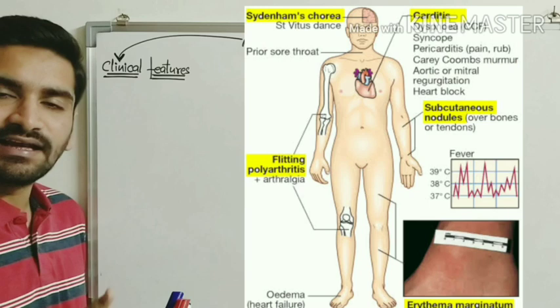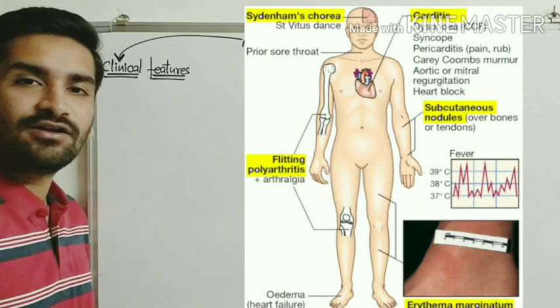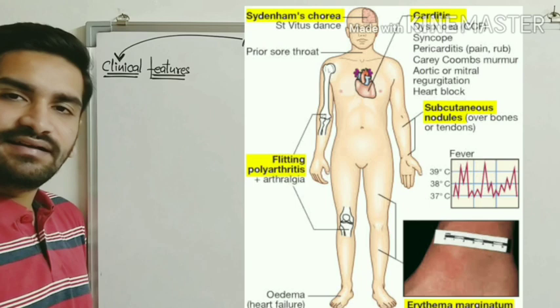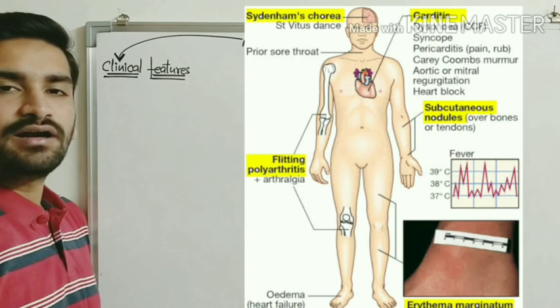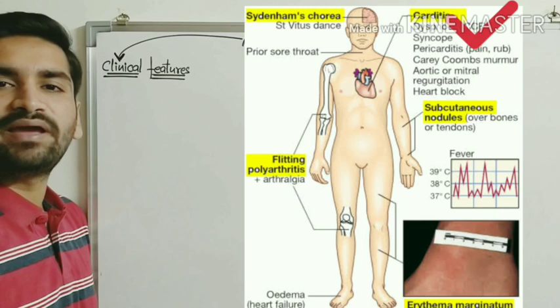Regarding carditis, it involves the endocardium, myocardium, and pericardium. The incidence of carditis is quite high — 90% in children around 3 years of age — but decreases to approximately 30% in adolescents. As patient age increases, the incidence of carditis decreases. Patients may experience dyspnea, chest pain, and murmurs.